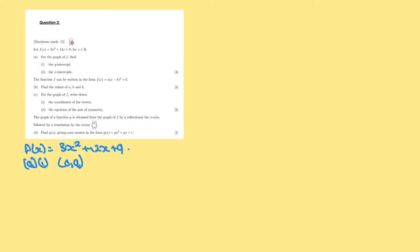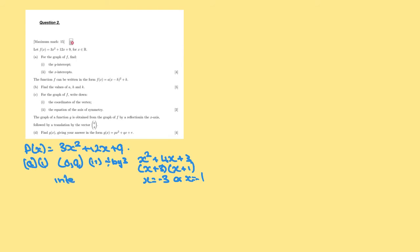For the x-intercepts, we will have to factorize. First, divide by 3, so we get x squared plus 4x plus 3. We want two numbers that when multiplied together give 3 and when added together give 4. So we get x plus 3, x plus 1. Therefore x equals minus 3 or x equals minus 1, so the intercepts are (minus 3, 0) and (minus 1, 0).